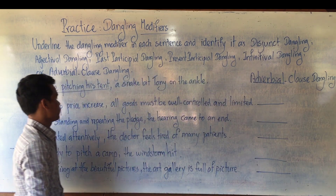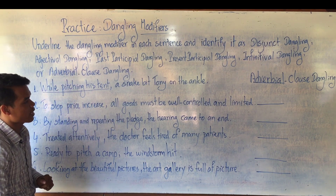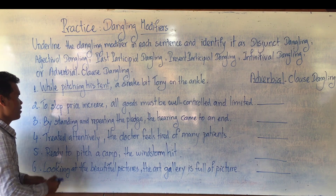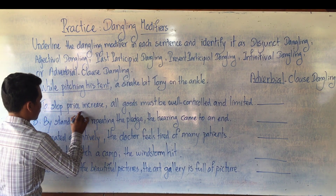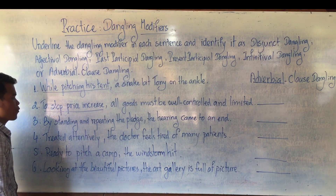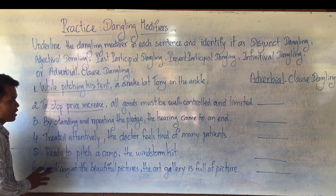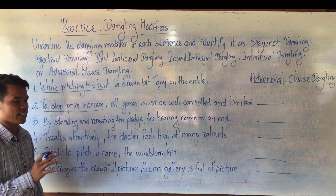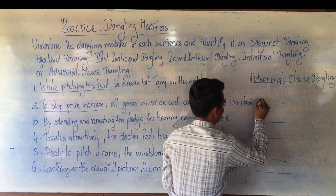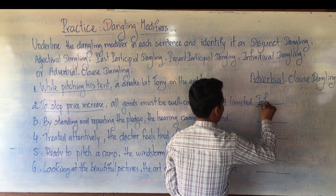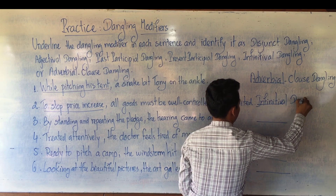Number two: 'To stop price increase, all goods must be well controlled and limited.' Of course the dangling comes at the beginning of the sentence, so it is 'to stop price increase.' What type of dangling is it? 'To' is a two-infinitive. So when you see the word infinitive like this, it is called infinitive word dangling.